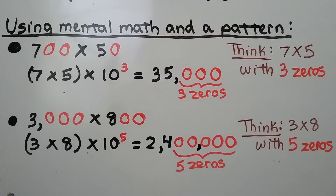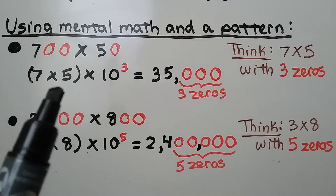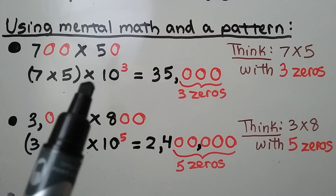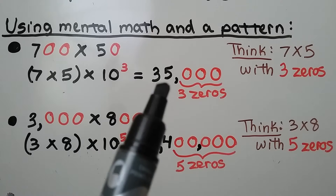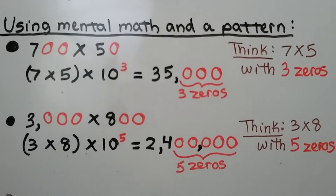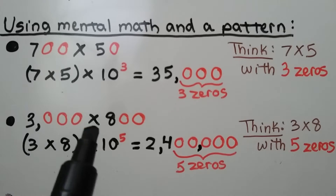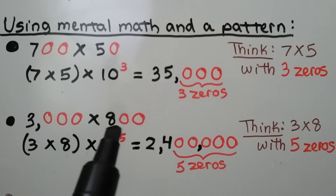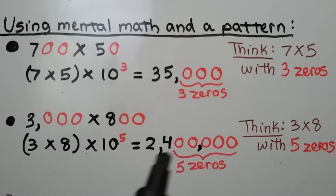Using mental math and a pattern, we have 700 times 50. Our basic facts are 7 times 5. There are three zeros, so it's times 10 to the third power. That would be 35 with three zeros — 35,000. Next, 3,000 times 800: we think of the basic fact 3 times 8, which is 24, and we have five zeros, so it's times 10 to the fifth power.